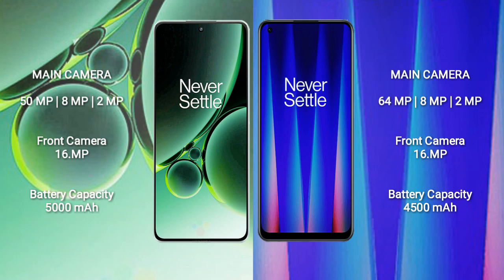OnePlus Nord 3 rear side triple camera setup: 50MP plus 8MP plus 2MP, and its front camera 16MP. OnePlus Nord CE2 rear side triple camera setup: 64MP plus 8MP plus 2MP, and its front camera 16MP.